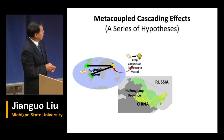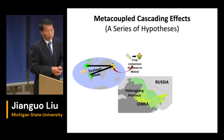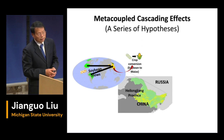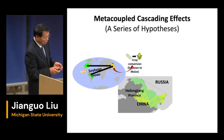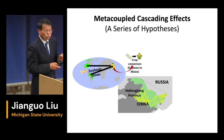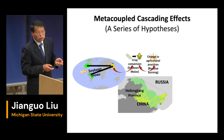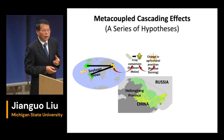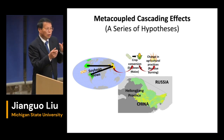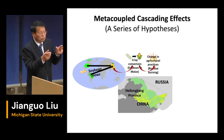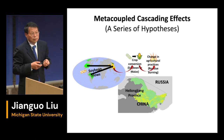Soybean was domesticated in China 3,000 years ago, and until a few decades ago China was still the largest exporter of soybean. But now China consumes 80% of the international soybean market. Heilongjiang province still produces a lot of soybean, but much less than earlier years. When farmers convert soybean production to corn production, they also change some agricultural practices.